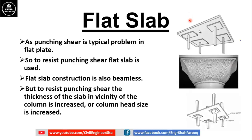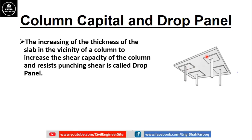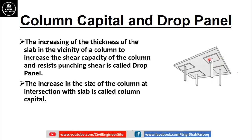Here you can see that the thickness of the slab in the vicinity of the column is increased, or you can increase the head size of the column, which is known as column capital. Increasing the thickness of the slab in the vicinity of a column to increase the shear capacity and resist punching shear is called a drop panel. Here you can see in this picture that the thickness of the slab near the column is increased — this arrangement is known as drop panel.